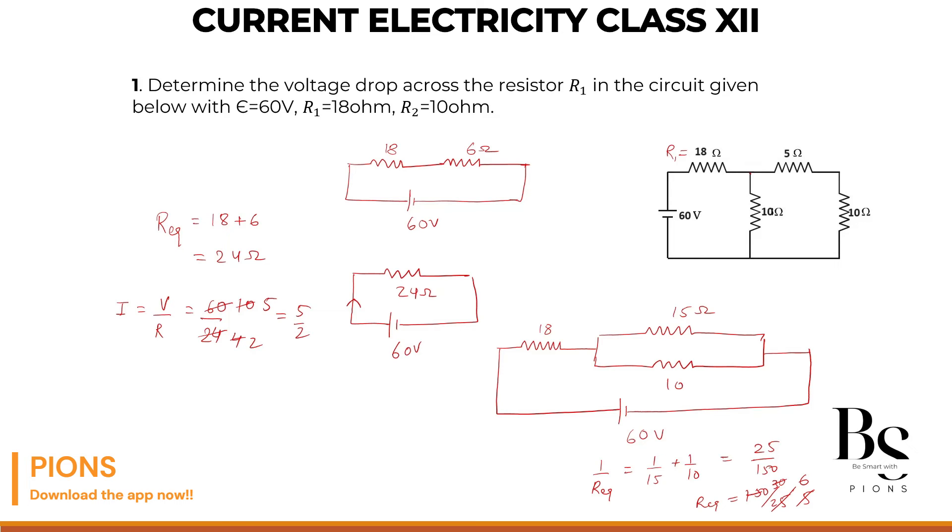Now this 5 by 2 amperes of current is going across 24 ohms, which means it's going to the circuit. So 5 by 2 will be the same across this 18 ohm and across this 6 ohm. Both 5 by 2, because they are in series.